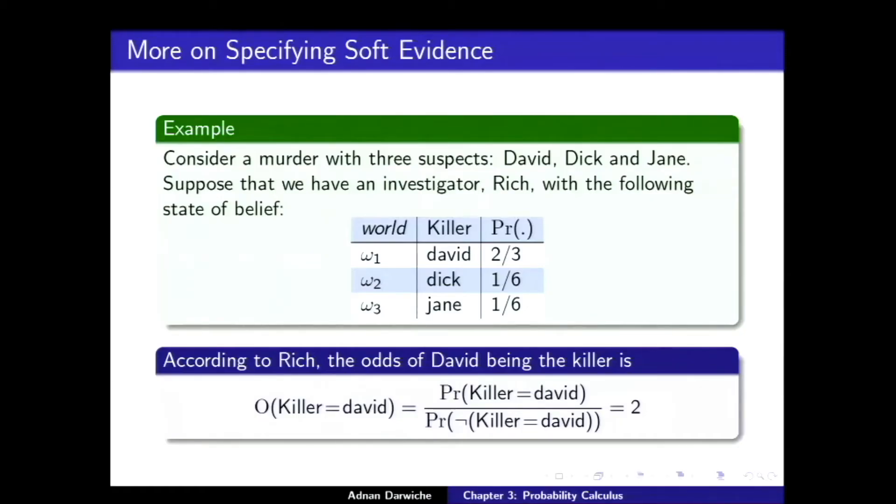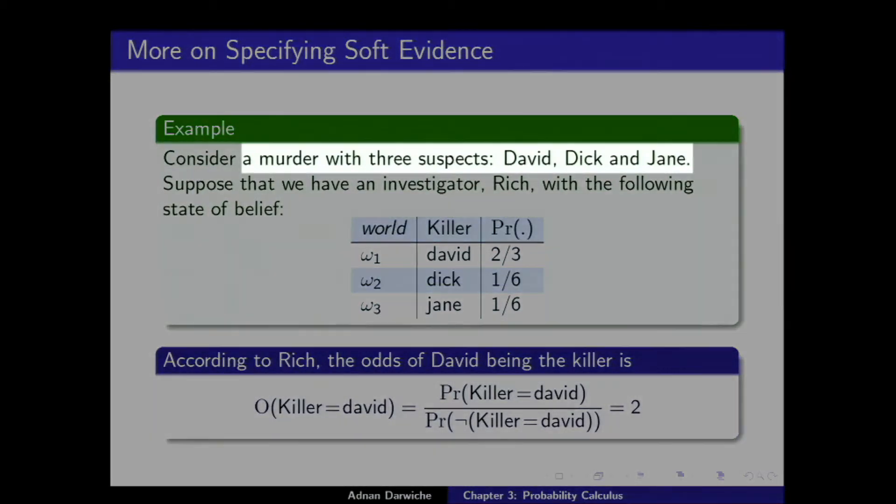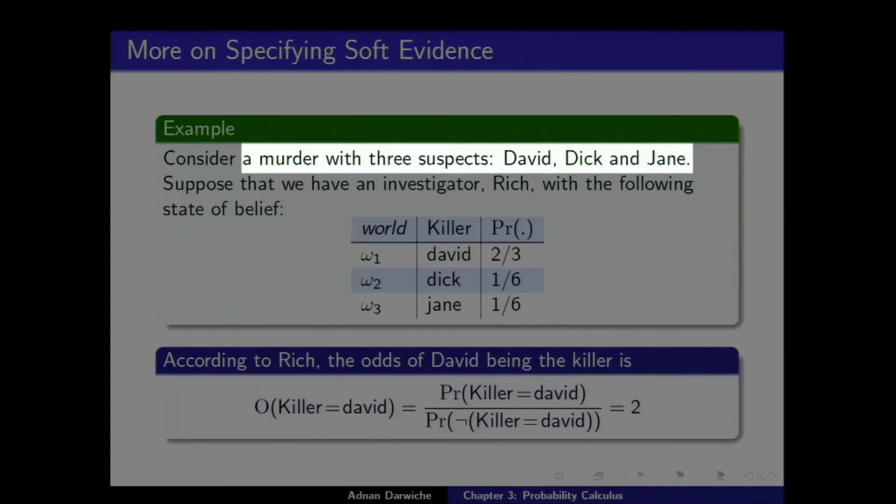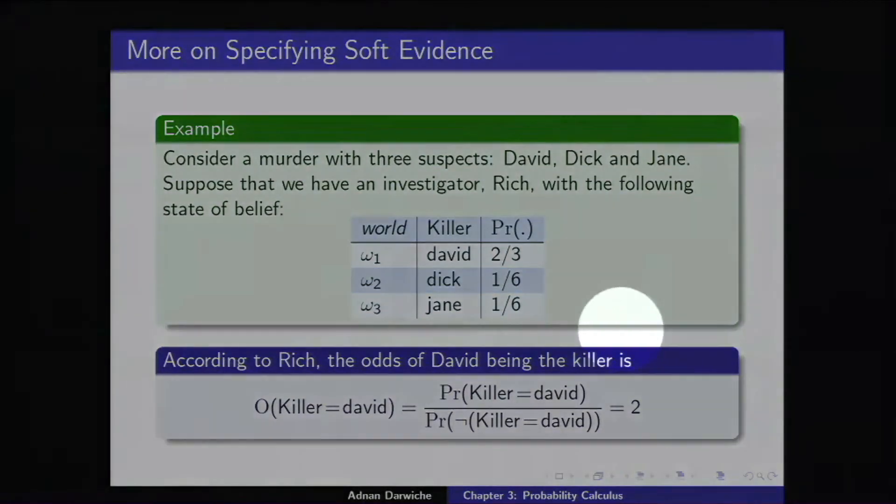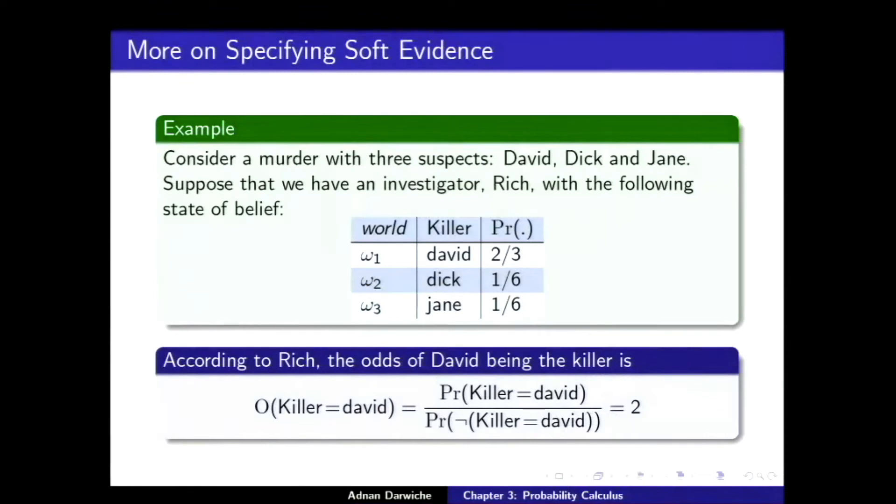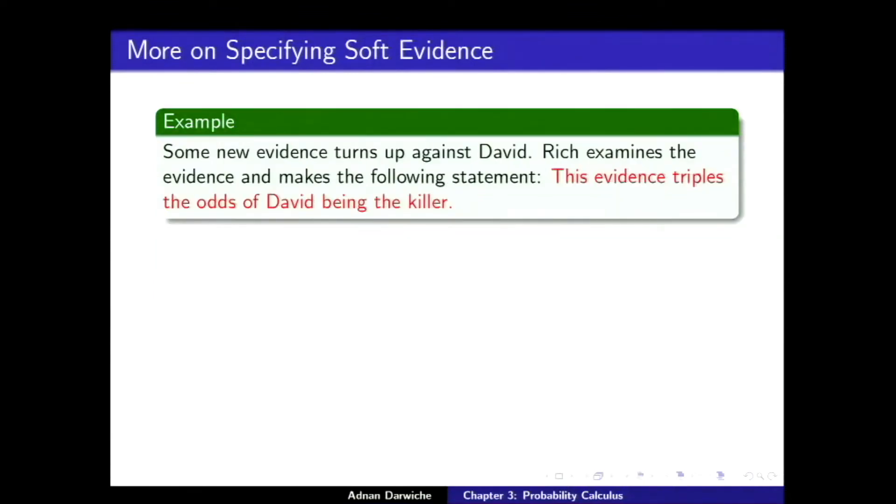Here's a concrete example to illustrate this difference between the nothing else considered and everything else. We have murder with three suspects. David, Dick, and Jane. And we have two investigators. The first one of them is Rich. And Rich's state of belief is the following. This is a distribution. We have a single variable that has three values. The killer being David, Dick, or Jane. Three worlds. And here are the probabilities. This is Rich's state of belief. Now, according to Rich, the odds of David being the killer is two. Now, some new evidence turns up against David. Rich examines the evidence and makes the following statement. And this evidence triples the odds of David being the killer. That's evidence of the second type.